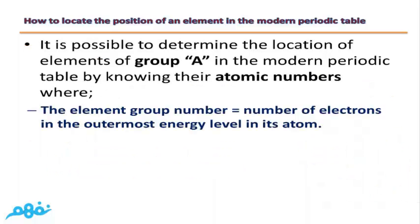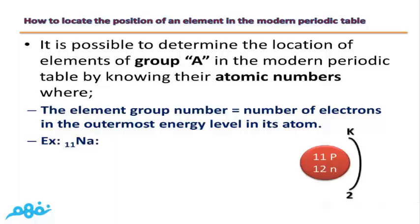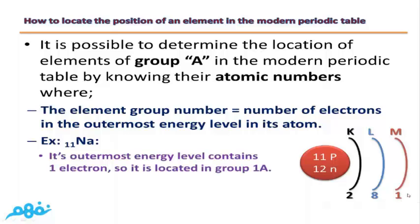The element's group number equals the number of electrons in the outermost energy level of its atom. Returning to our example of sodium: the outermost energy level, M, contains only one electron. This means that sodium is located in group 1A.